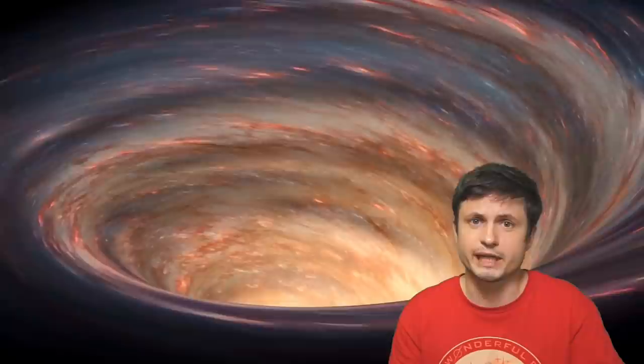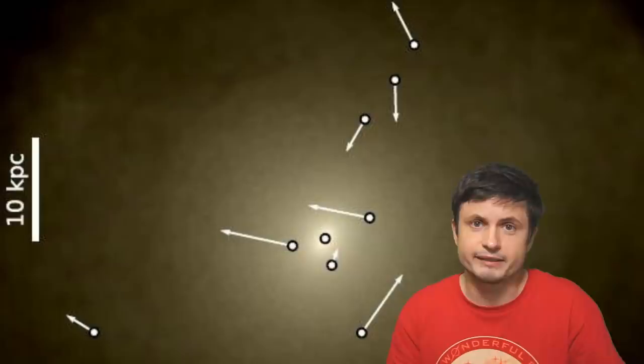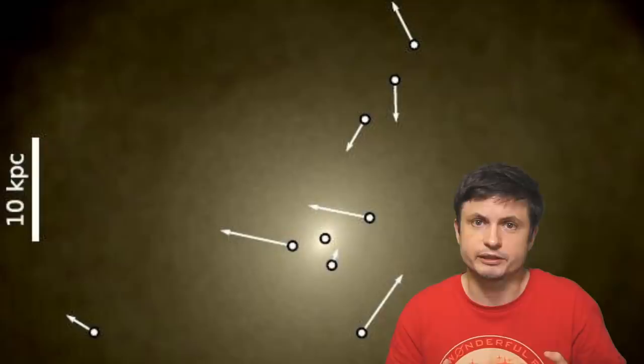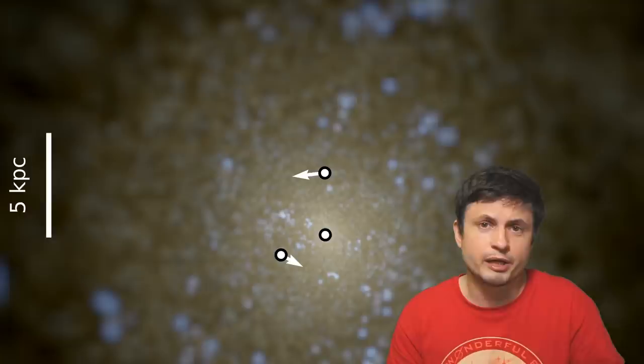But I guess the next few questions are, well, can we actually find some of them? Where would they be today? And how many can we expect from our own galaxy, from the Milky Way? Well, the additional simulations establish that there's a linear relationship between the total mass of the galaxy and the expected number of the wandering black holes.